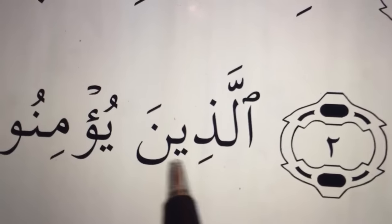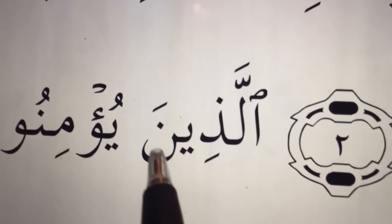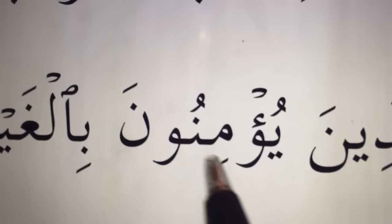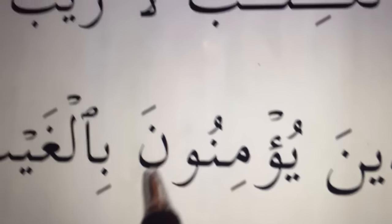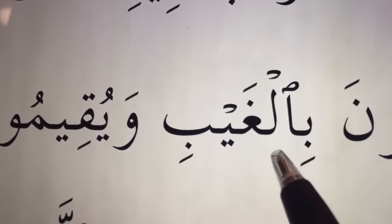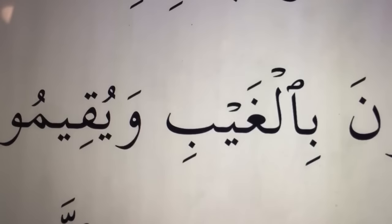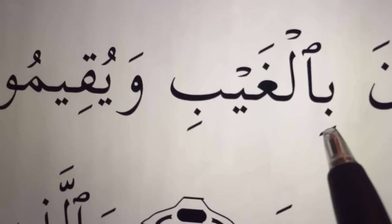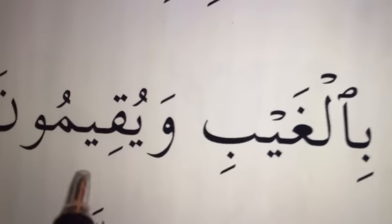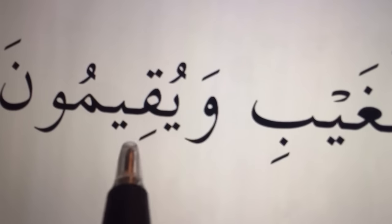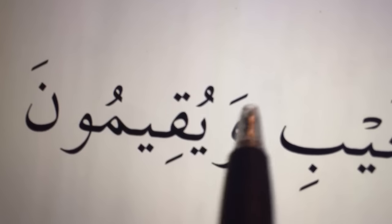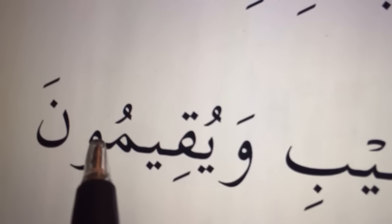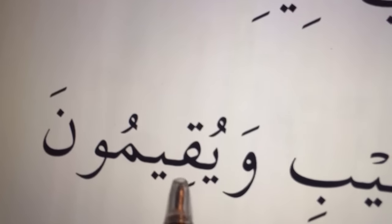Al-lazina yu'minuna bil-ghaybi. Bil-ghaybi. The ya — there is just extending the qaf, so you say yuqimu, not yuqimu, but yuqimu.